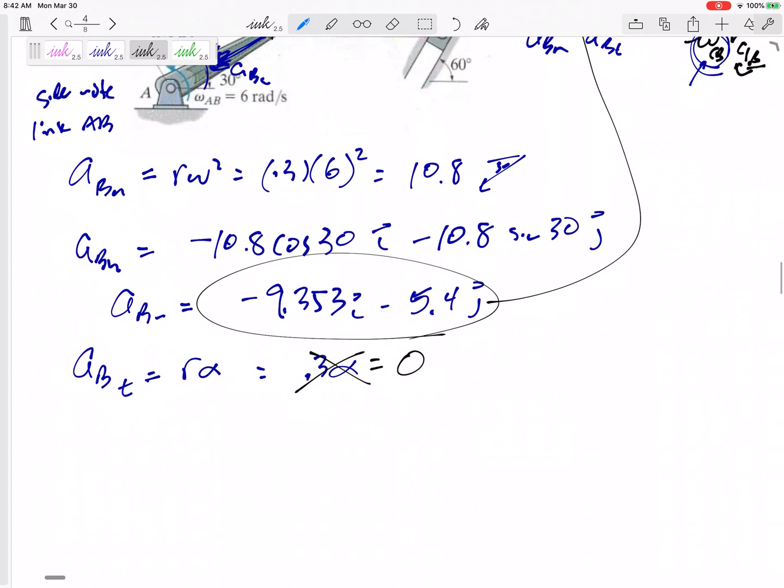So that is all I need to plug in right there for A, B. All right, so let's look at here A, C. I don't know it, but I know it is at this 60 degree angle, cosine 60 in the I, sine 60 in the J.